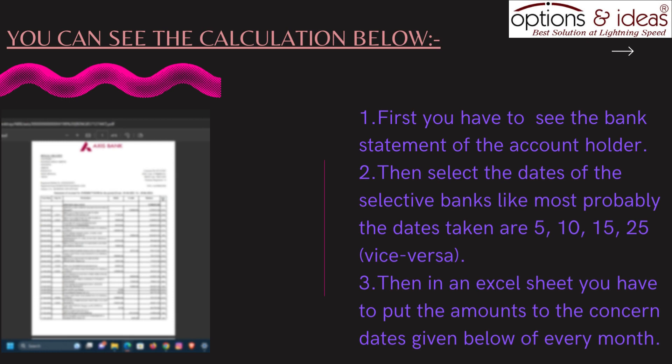You can see the calculation below. First, you have to see the bank statement of the account holder. Then select the dates of the selective bank. Most probably the dates taken are 5, 10, 15, 25, and so on. Then in an Excel sheet, you have to put the amounts against the concern dates given below for every month.